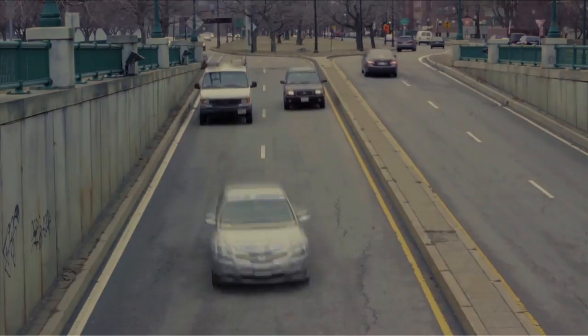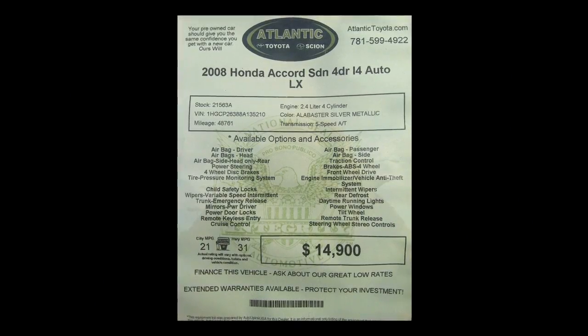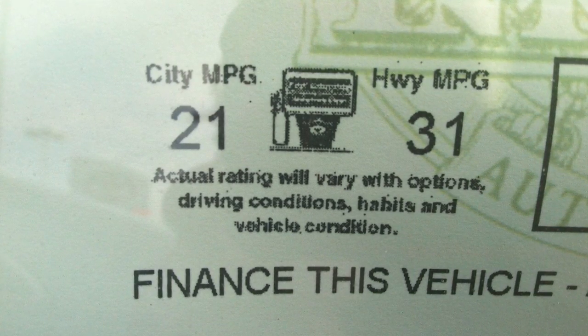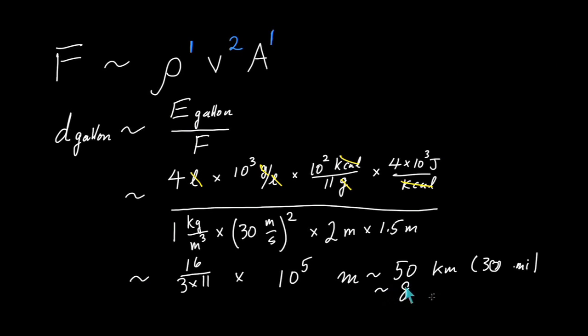The fuel efficiency of a car on the highway should be about 30 miles per gallon, or 50 kilometers per gallon. In the units used in the European Union, that's 8 liters per 100 kilometers.